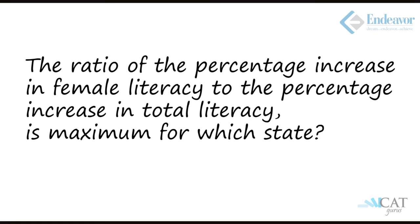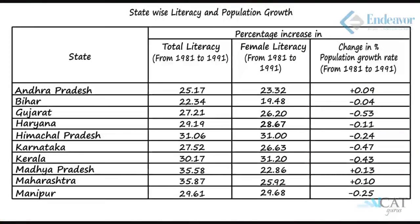Question 3: The ratio of percentage increase in female literacy to percentage increase in total literacy is maximum for which state? Female literacy has to be higher than total literacy. Going through the states — Andhra Pradesh, Bihar, Gujarat, Haryana, and Karnataka are all less. Kerala and Manipur are both more. Manipur's ratio is almost 1 since the difference is hardly anything, but Kerala has a larger difference with a similar base. So Kerala has the highest ratio, and option A is correct.